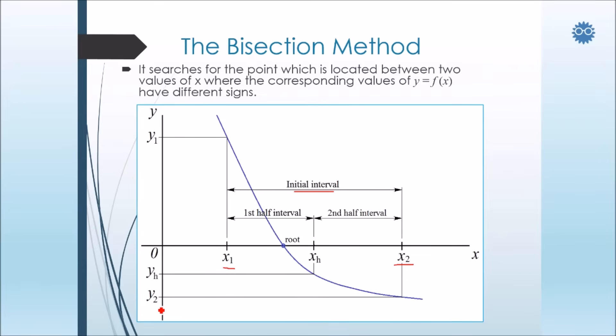Then we compute the corresponding values y1 and y2. If y1 and y2 have different or opposite signs, that means the root is located somewhere between x1 and x2. If the signs of y1 and y2 are the same, that means there is no root between x1 and x2.